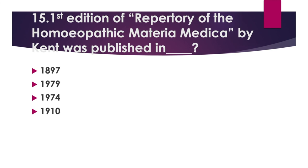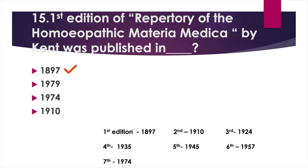The 1st edition of the Repertory of the Homeopathic Materia Medica by Kent was published in — Option A: 1897, Option B: 1979, Option C: 1974, Option D: 1910. Answer: Option A, 1897. 1st edition: 1897; 2nd edition: 1910; 3rd edition: 1924; 4th edition: 1935; 5th edition: 1945; 6th edition: 1957; 7th edition: 1974.